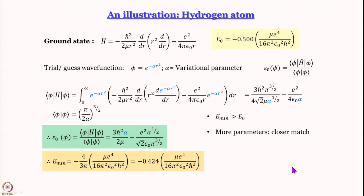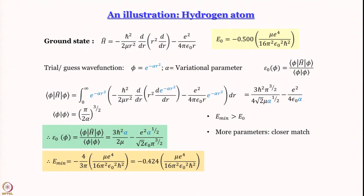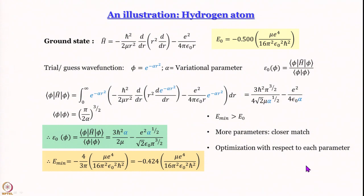Here we do not have to worry about over-parameterization — a beautiful consequence of the upper limit theorem. Whatever we get is always greater than the actual energy, so even if you over-parameterize it is not a problem. We can increase the number of parameters indefinitely. What we have to do is optimize the ε₀ functional with respect to each parameter, which requires iterations. For larger systems with many parameters, this takes enormous computational time.